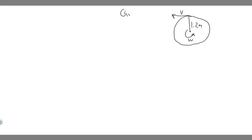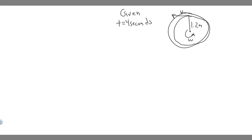Let's write down our givens. We know it makes one complete revolution every four seconds, so T equals four seconds — that's the time it takes to rotate once. We also know the radius: the child is 1.2 meters from the center, so radius equals 1.2 meters.